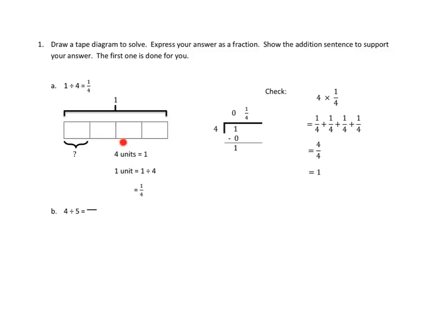So they said, hey, if 4 units add up to a whole, then we can do division, right? We can say that 1 unit equals 1 divided by 4. If 4 units make up 1 whole, then 1 unit would make up 1 divided by 4. And they said that that means that this is 1 fourth.